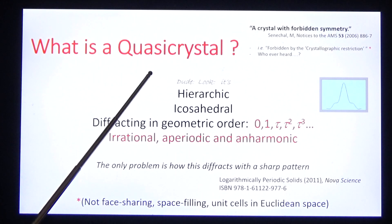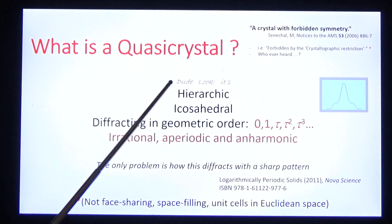What is a quasi-crystal? Shechtman wrote, a metallic phase with long-range order and no translational symmetry.